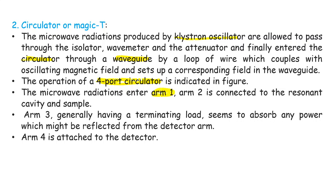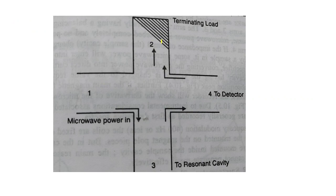In the diagram of the Magic T circulator: arm 1 is where radiations enter; arm 3 below is where the resonant cavity is attached; arm 2 is also connected to the resonant cavity; arm 3 has a terminating load that can absorb any excess radiations; and arm 4 is attached to the detector. This is the circulator, or the Magic T.